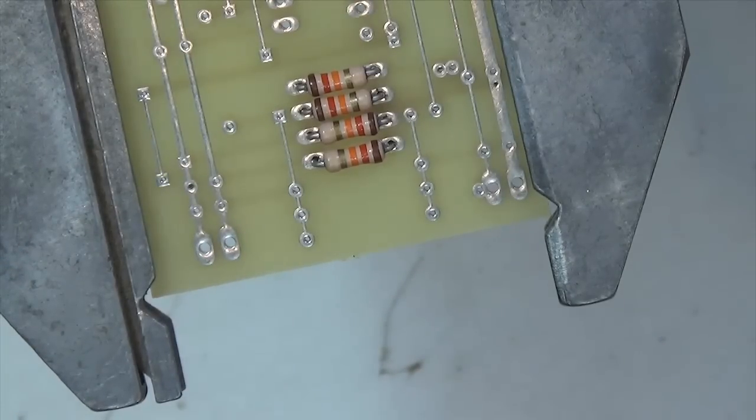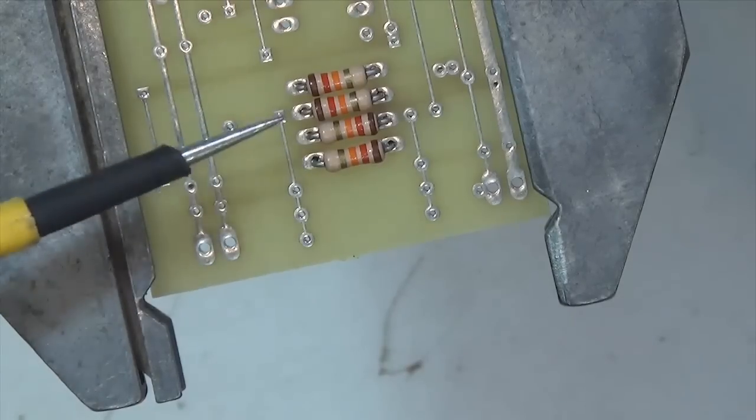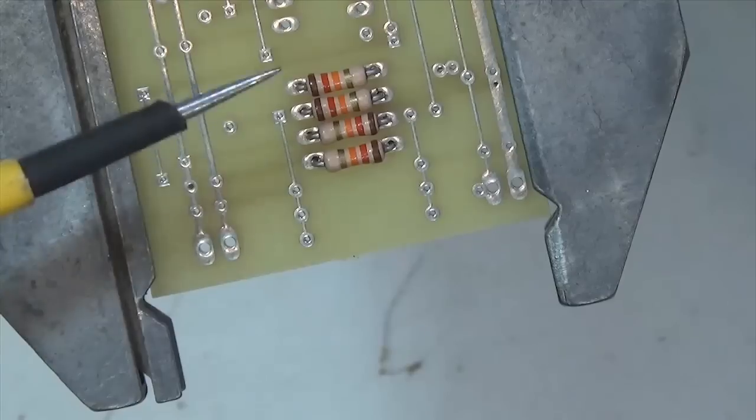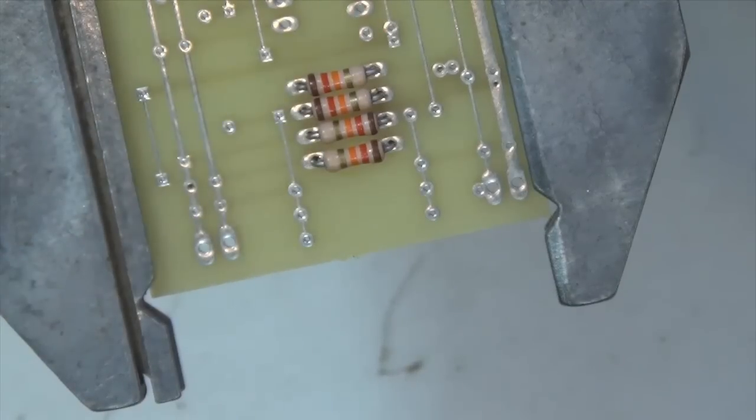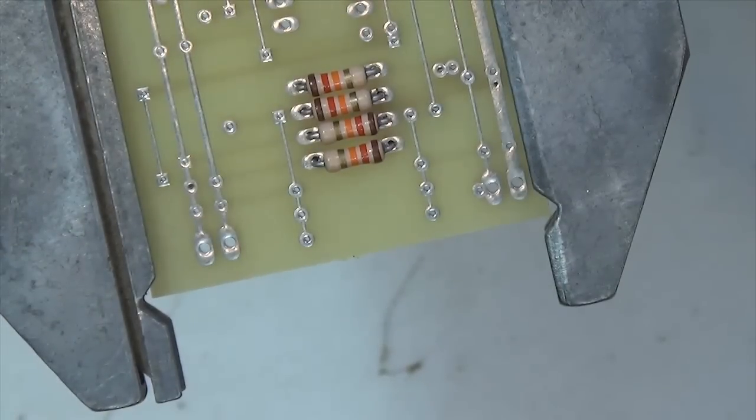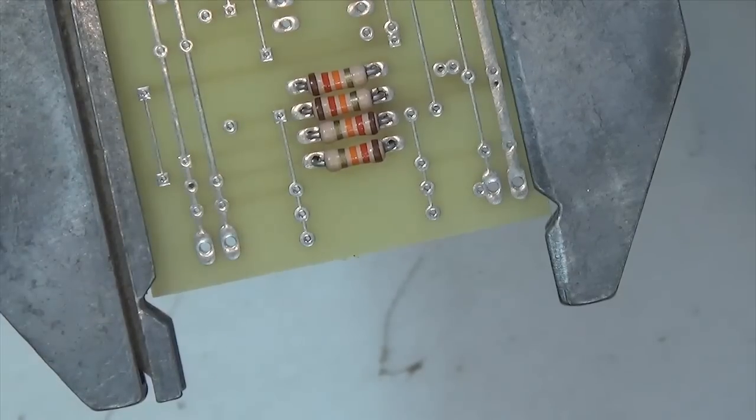The other thing that we want to do is we want to get the components centered between the holes and so that the components are laying flat down onto the circuit board. So now what I'm going to do is I'm going to pull two of these resistors out and reverse them.